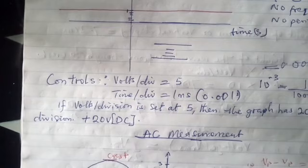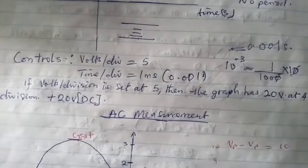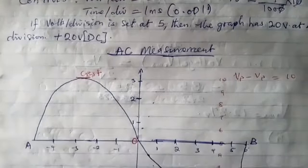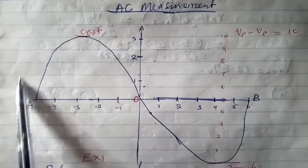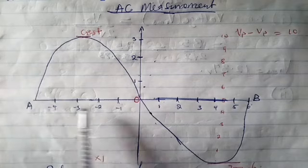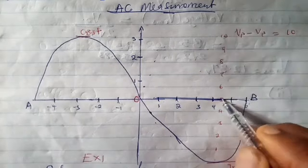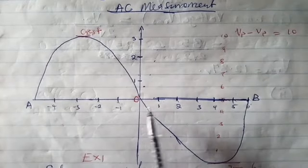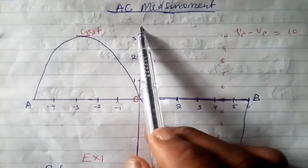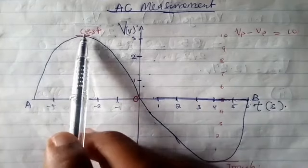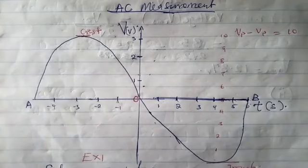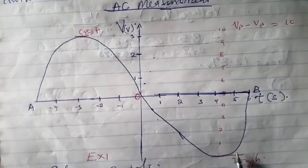Let's move forward to the AC measurement. In an AC measurement of an oscilloscope, we are having this kind of sinusoidal graph. This is the graph we have for an AC measurement. If you are looking at this graph, you are going to have a start and an end. This is the crest — the top, the maximum. While this part is the trough, which is the minimum.